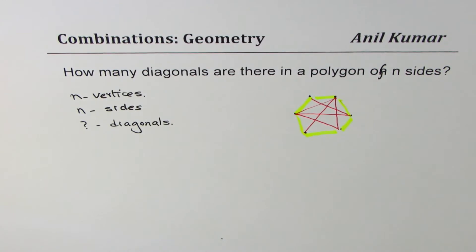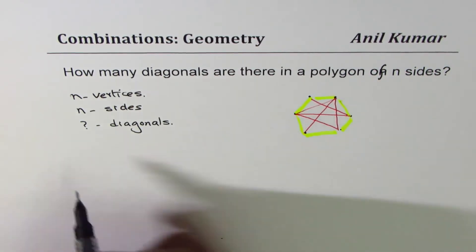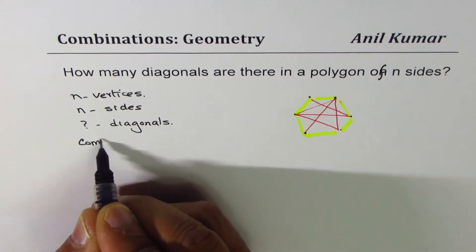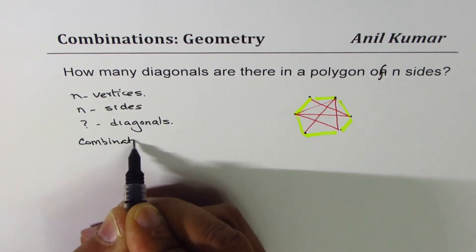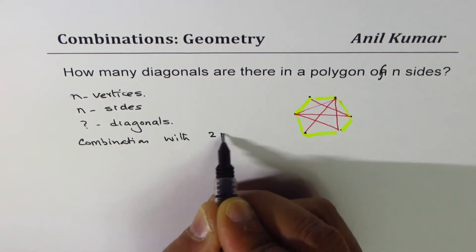You can now pause the video and answer the question. Here is my suggestion. To draw a line, we need two points. So we're looking for a combination with two points.